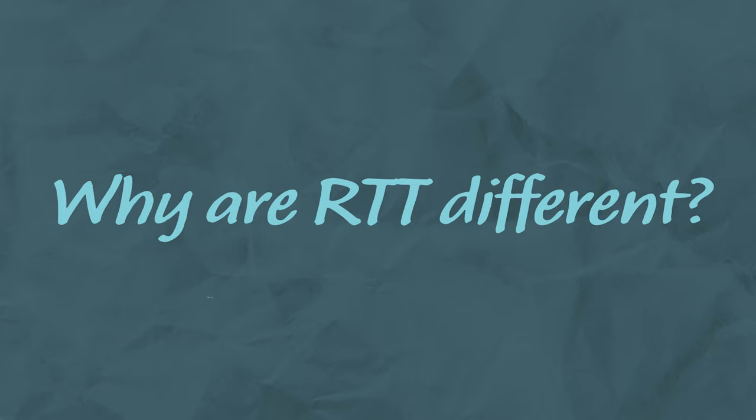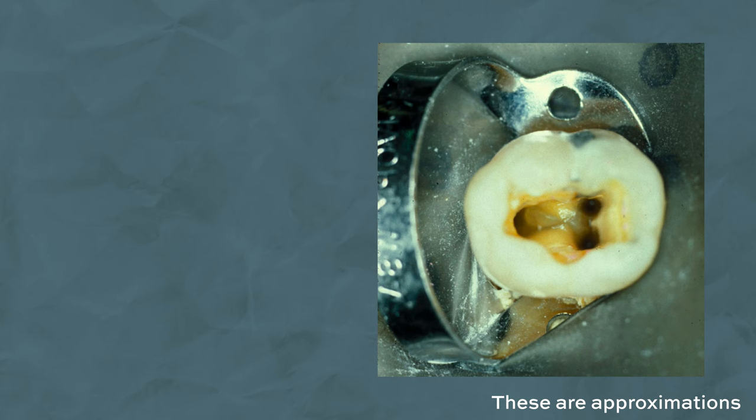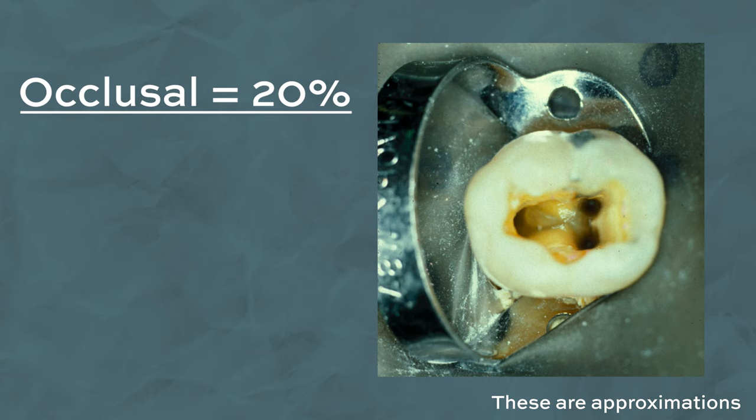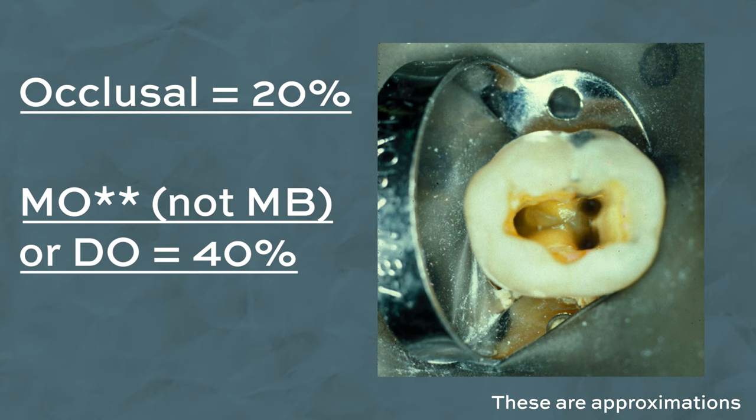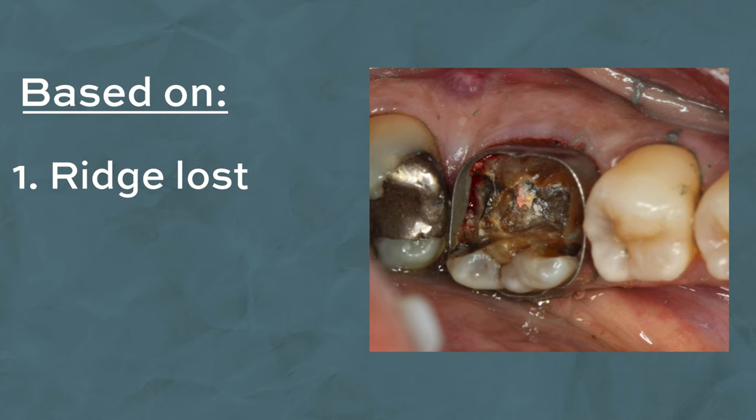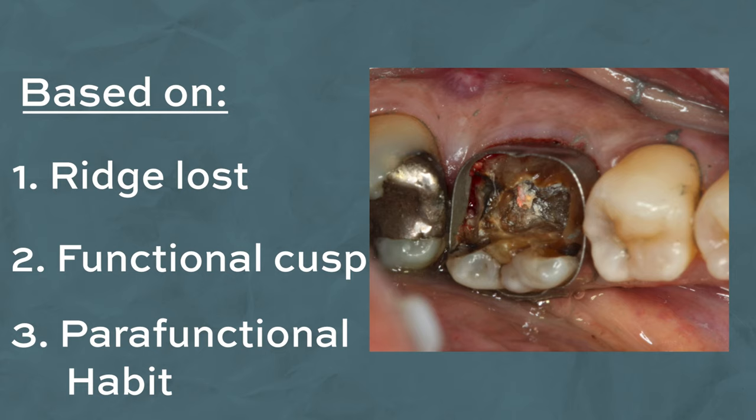Root-treated teeth are more brittle and access cavities weaken teeth depending on how much tooth tissue has been lost. There is about a 20% weakening if the occlusal surface has been lost, a 40% weakening if you've lost mesial, buccal or disto-occlusal surfaces, and a 60% weakening for an MOD. This varies based on the extent of the ridge lost. If the functional cusp has been lost, or if the patient has a parafunctional habit, we need to do something to restore the strength at the end of the root canal treatment.